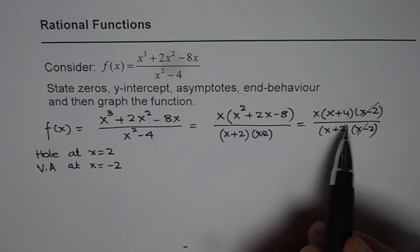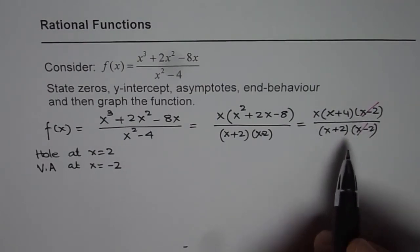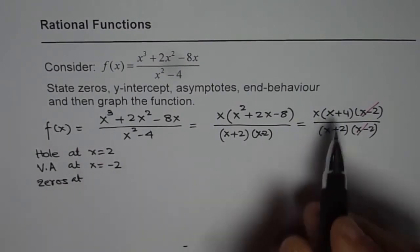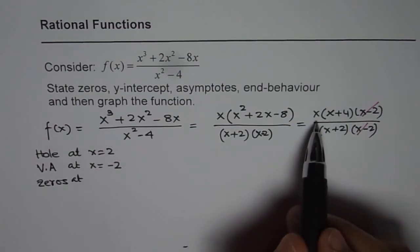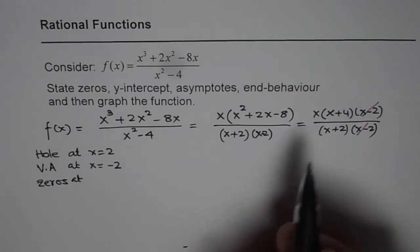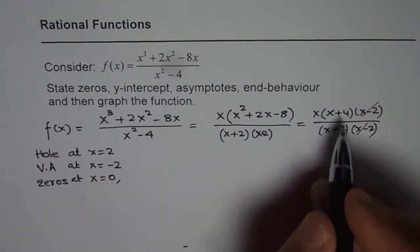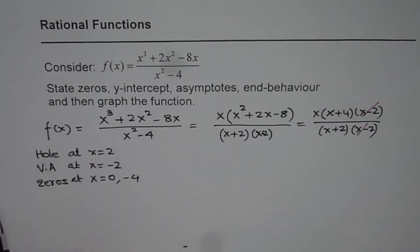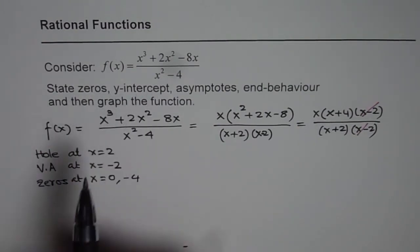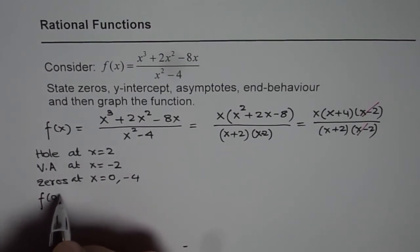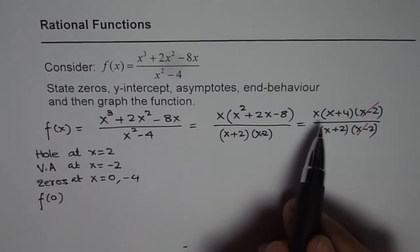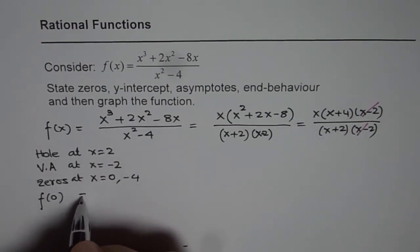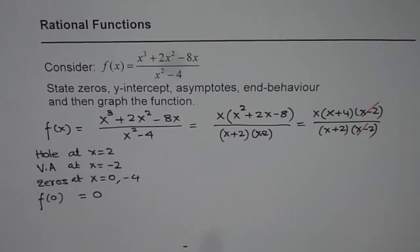Now let's look at the zeros of this rational function. Zeros occur when the numerator is 0. The numerator will be 0 for x = 0 and x = −4. So those are the two zeros. The y-intercept is the value of the function when x = 0. If we substitute x = 0, we have 0 in the numerator, so the y-intercept is 0.